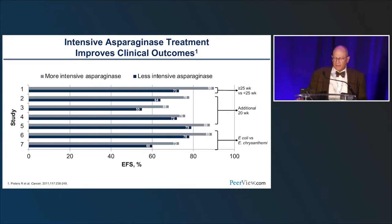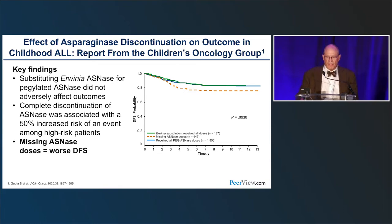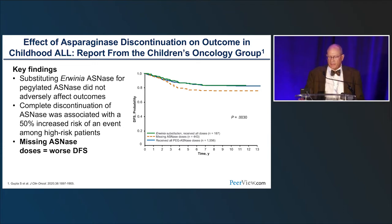Intensive asparaginase treatment improves clinical outcomes. The gray bars show treatments using more intensive asparaginase; blue bars show less intensive asparaginase. The numbers embedded in the bars show outcomes in terms of EFS percentage — the message is that more asparaginase generally worked better. A key study by Gupta et al. in 2020 reports that where there was discontinuation of asparaginase, there was a decrease in event-free survival — a really important finding.